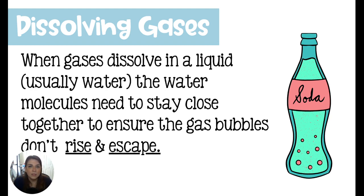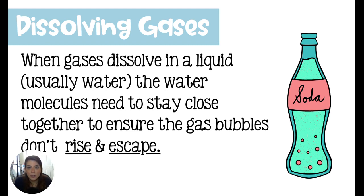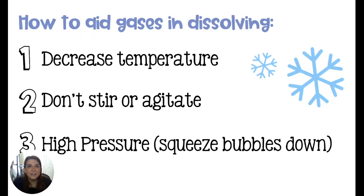It's kind of the opposite here. When we dissolve solids, we want our water moving very well to make room for our solid to wiggle in between. But for gases, we want our water moving very slowly so that the bubbles stay trapped. So if we are dissolving a gas into a solution — think of a soda — we want to decrease the temperature of the solvent.